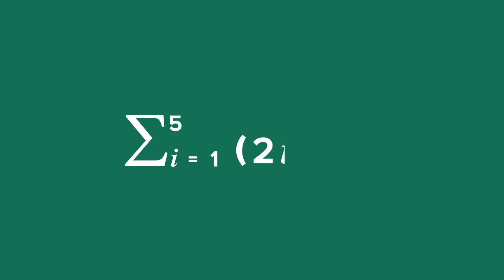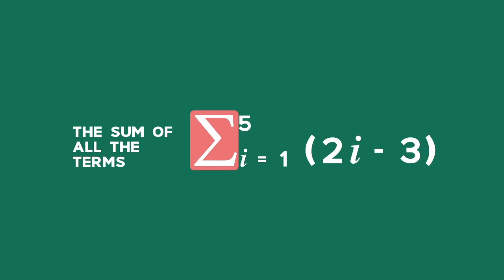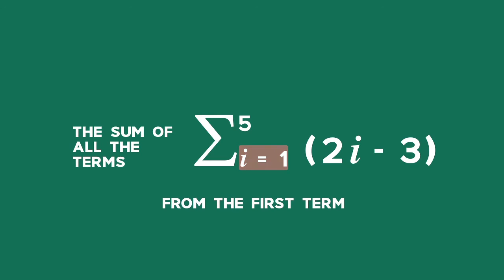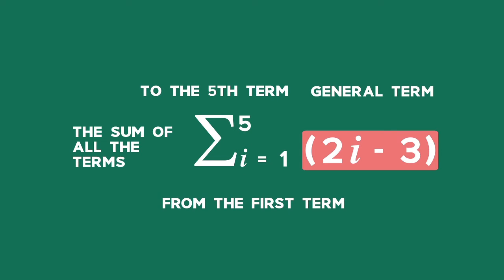Example 1: Sigma notation. The expression on the screen means the sum of all the terms from the first term to the fifth term of the sequence with the general term 2 times i minus 3 in brackets.